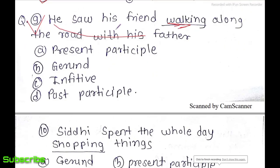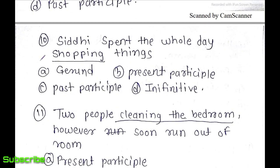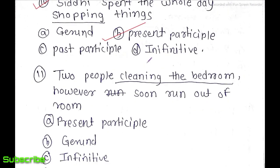Question 9: 'He saw his friend walking along the road with his father' — 'walking' is an action being performed, but there is no helping verb alongside it, so this is a present participle. Question 10: 'Siddhi spent a whole day shopping things' — 'shopping' is an action performed by Siddhi, but again there is no helping verb, so this is also a present participle.